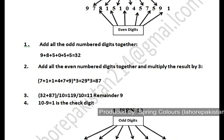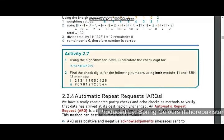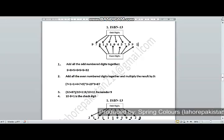Now let's move on to question 2, in which you have been given two numbers and you have to calculate the check digits using both methods — Modulo 11 and ISBN-13. Let me go to the calculation.